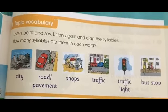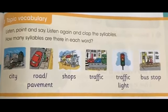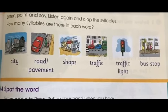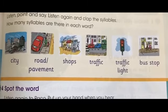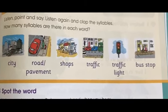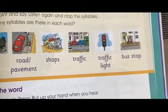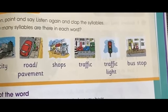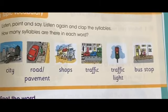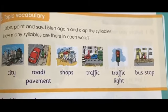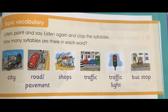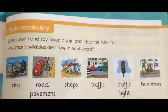Now, my students, the word 'city' has two syllables. The word 'road' has one syllable. 'Pavement', two syllables. 'Shops', one syllable. 'Traffic', two syllables. 'Traffic light', three syllables. 'Bus stop', two syllables.